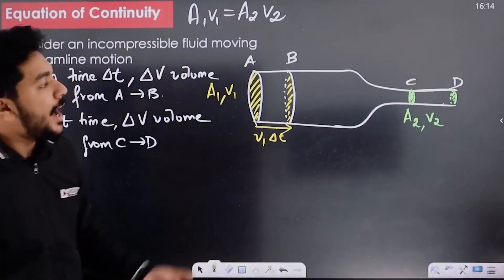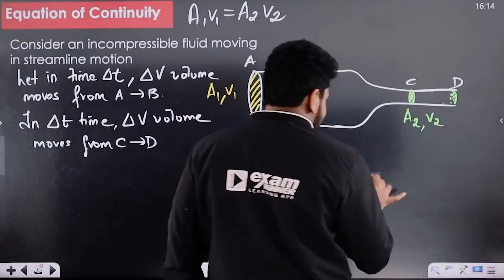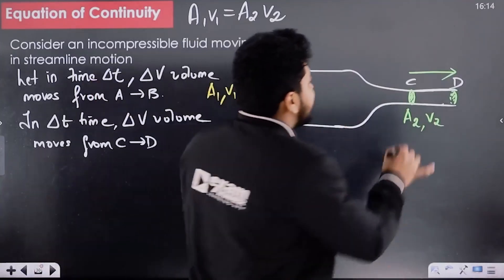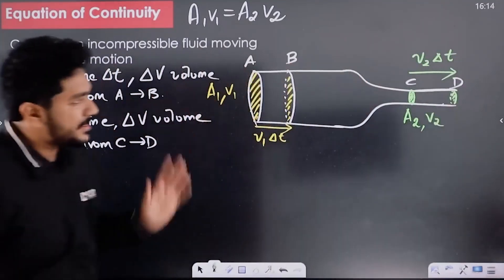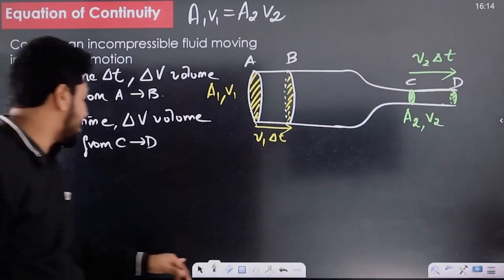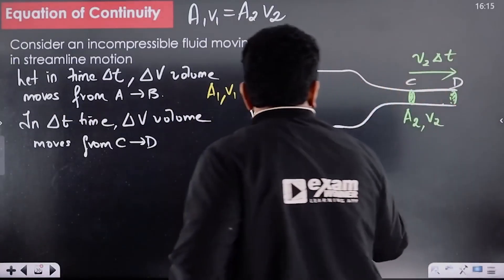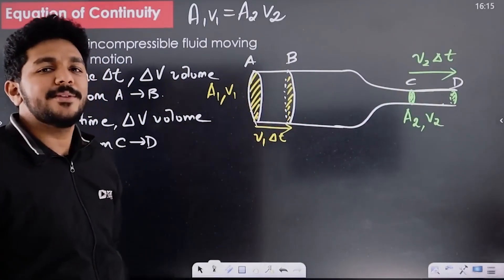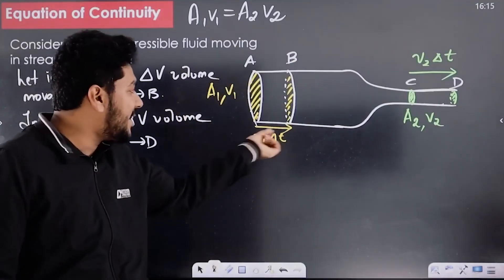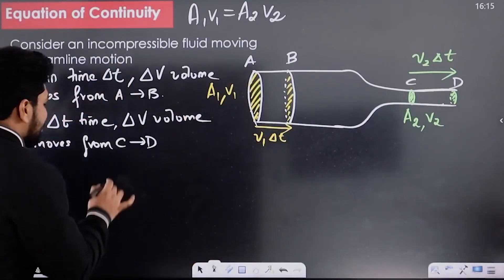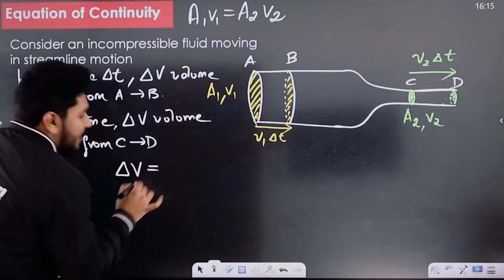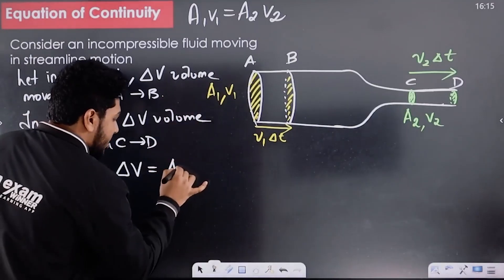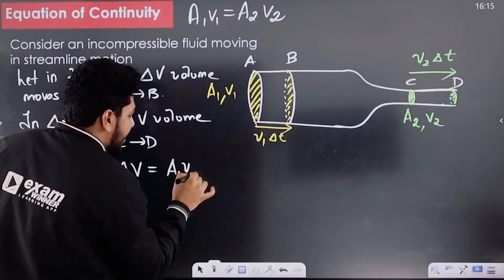The velocity V1 times delta-t gives the distance. What is the velocity? What is the time? What is the distance? The velocity of V2 into the time gives the distance V2 delta-t. Now, what is the volume of delta-v? Because this is a cylinder — the base area is A1 into its height, which is V1 delta-t.